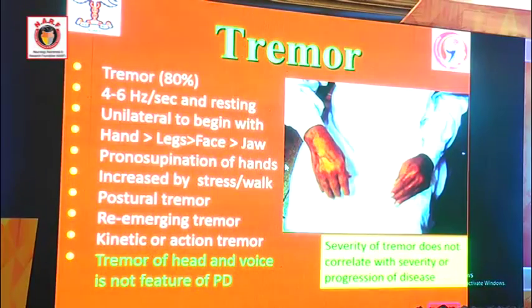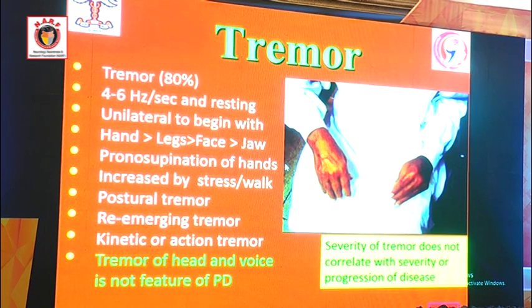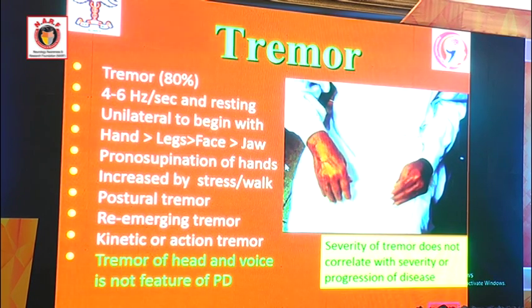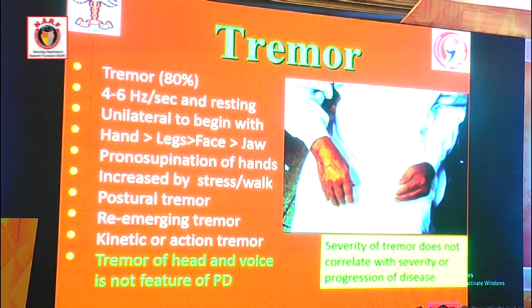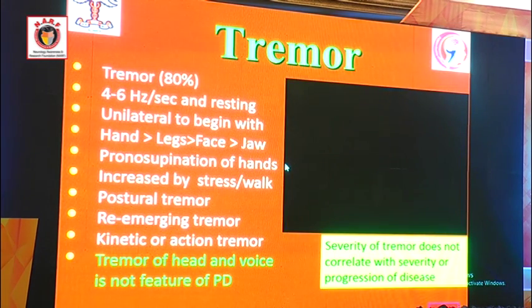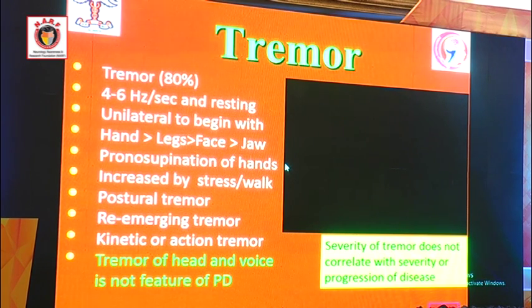Regarding the classical features of tremor: this is classically a resting, slow, 4 to 6 Hz tremor. Hands are affected more than the legs and then the face, with a pronation-supination movement. You may have postural tremor and action tremor in about 15% of cases, and you may have re-emerging tremor. Tremor of the head and voice is not a feature of Parkinson's disease - if tremor of the head and voice is present, think of essential tremor or another alternative diagnosis.